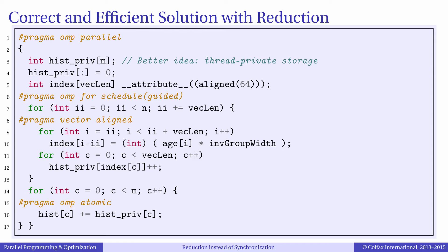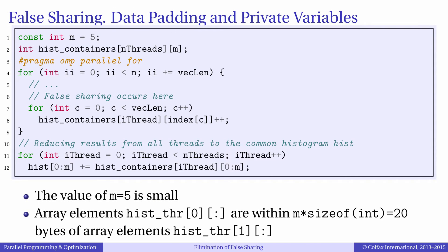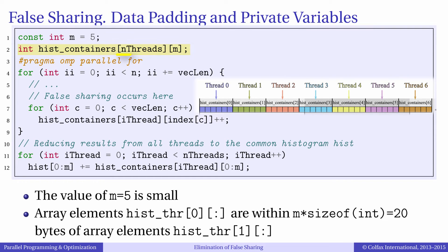However, it has one disadvantage: once we leave the parallel region we lose all of the thread private data. Sometimes we may want to have access to that data outside of the parallel region — for example, for statistical analysis or to implement a tree reduction algorithm in another parallel region. To retain thread private data we can implement a similarly structured parallel reduction. In this new implementation, instead of a private array in each thread, we will create one global two-dimensional array. The outer dimension will have as many entries as we have threads, and the inner dimension equals the size of the histogram array.